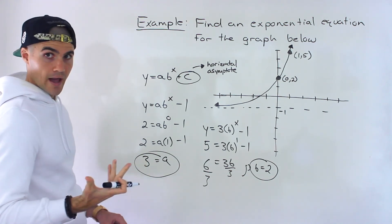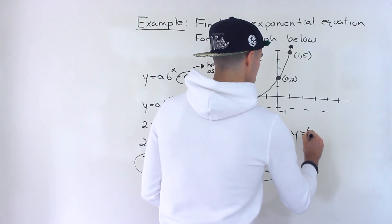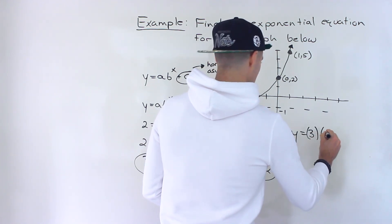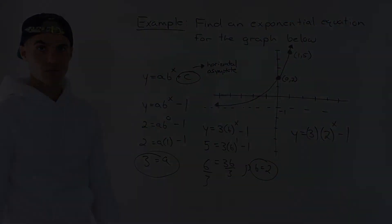And so we have the full equation. So y equals, the a value is 3, the b value is 2, and then we'd have minus 1.